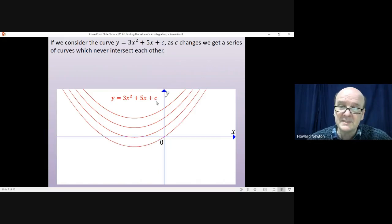And c is the y-intercept, so this would be 6, this would be 4, this would be 2, this would be 0. If c was minus 2 the curve would be down here, if c was minus 4 then it would be down here.